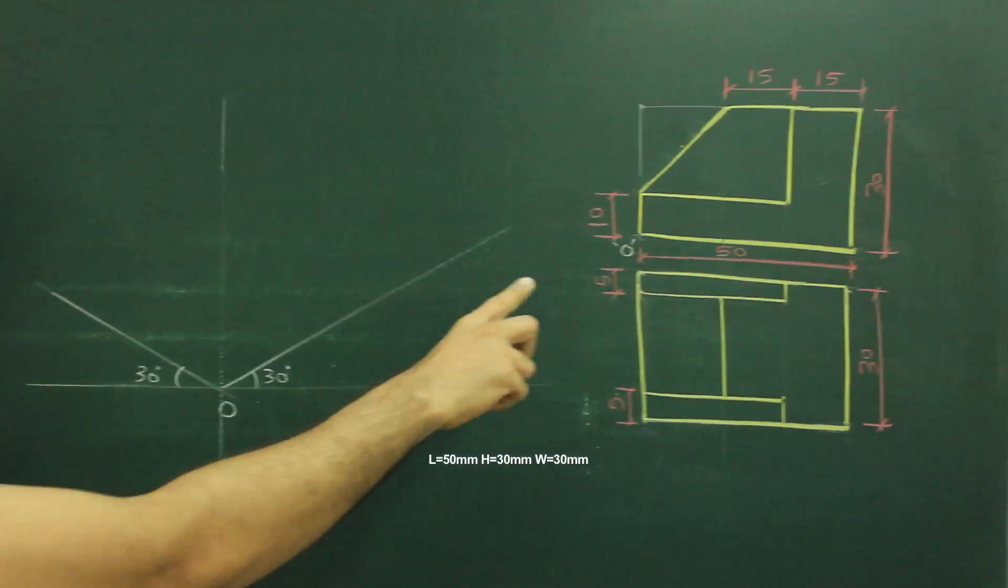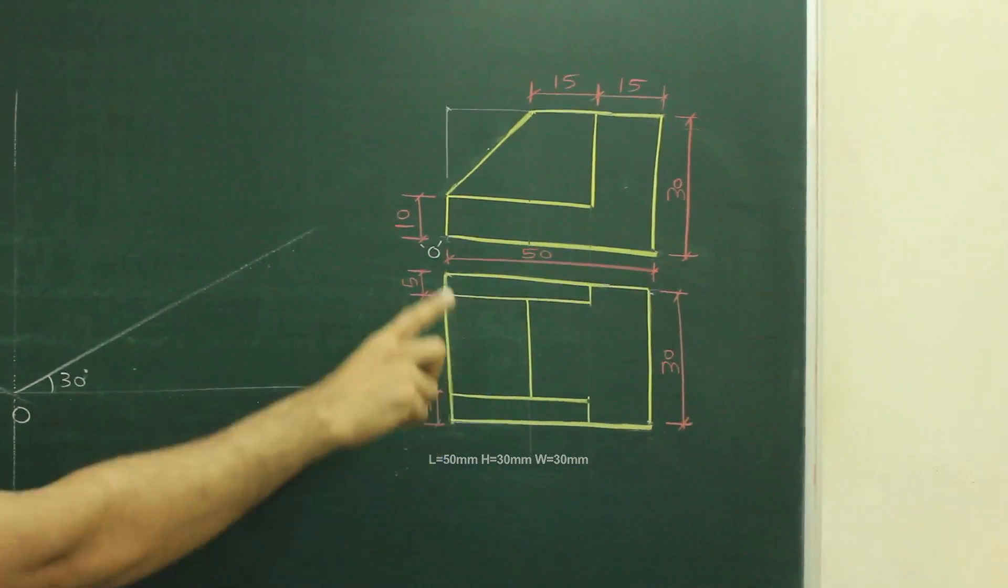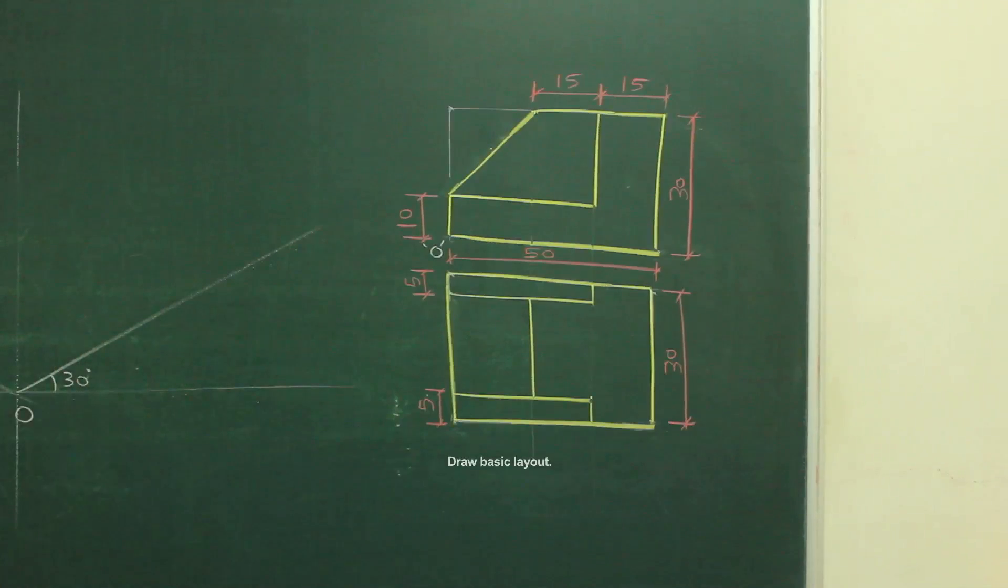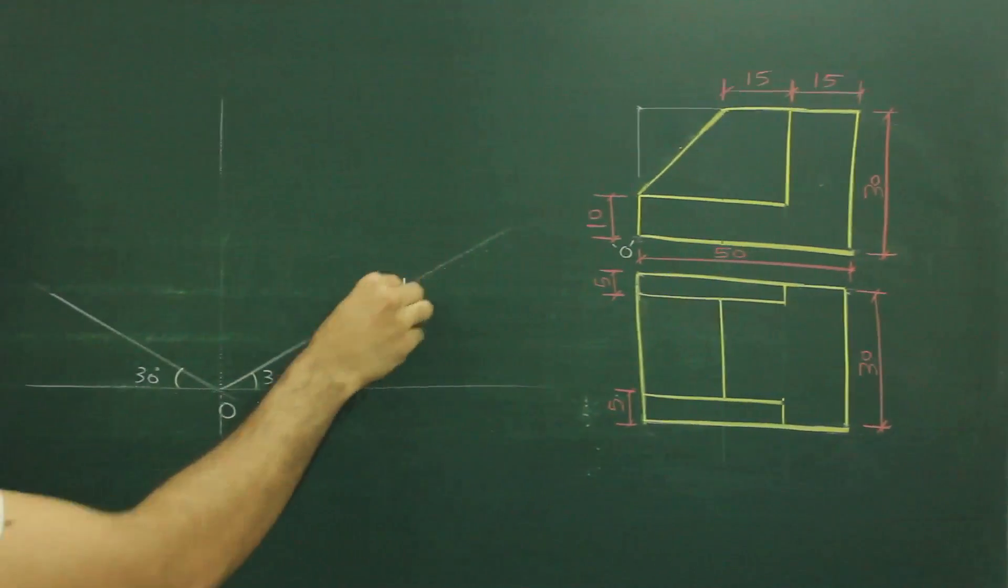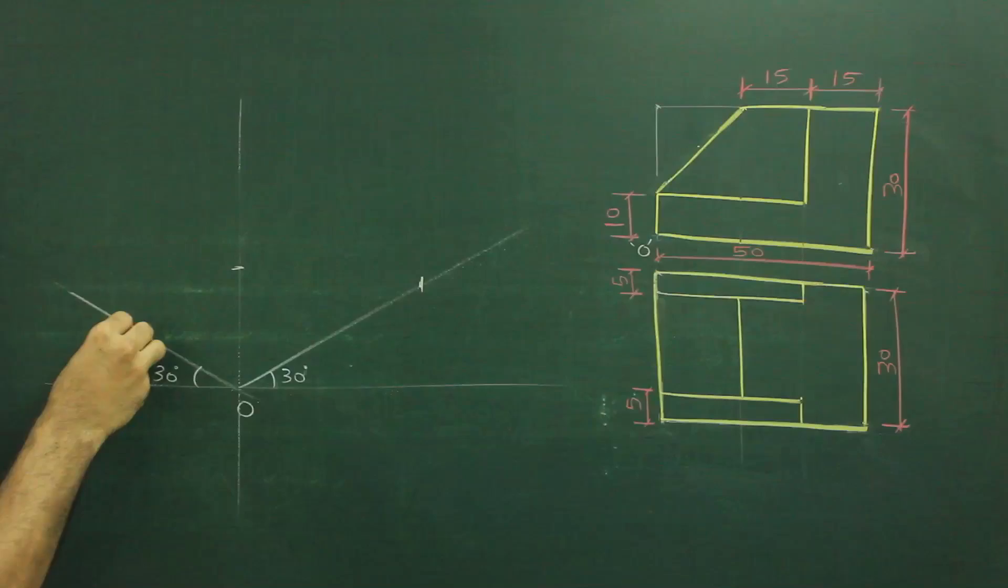In this sum, length is 50, height is 30 and width is 30. So first we will draw a layout. We will mark 50 on this, 30, 30.